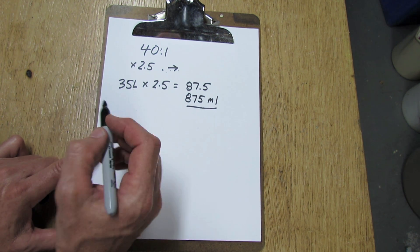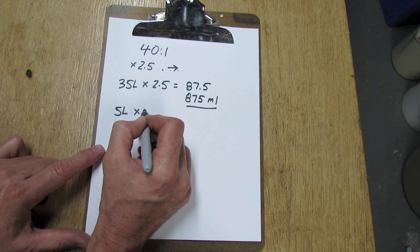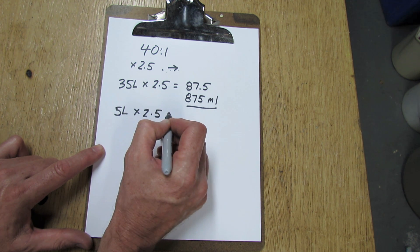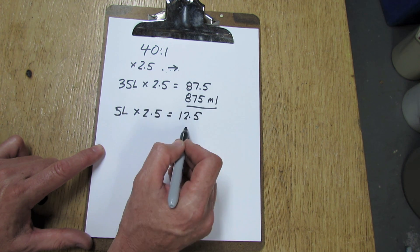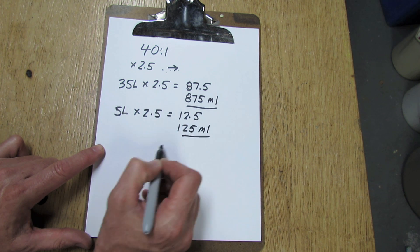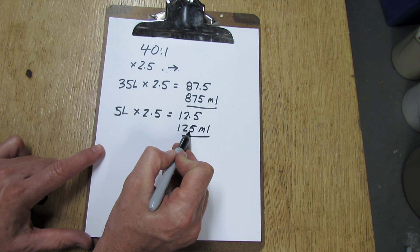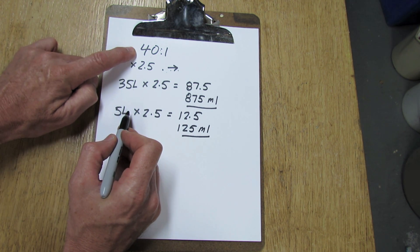Let's use another example. Let's use 5 liters. 5 liters times 2.5 equals 12.5. Move the decimal place over, that's 125 milliliters. You're going to add 125 milliliters to 5 liters of fuel to give you a 40 to 1 ratio.